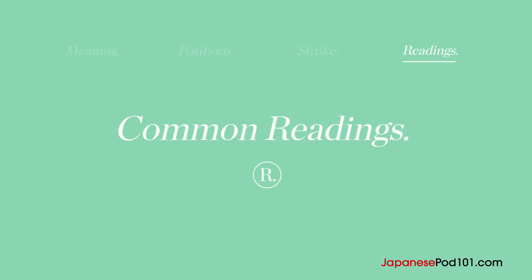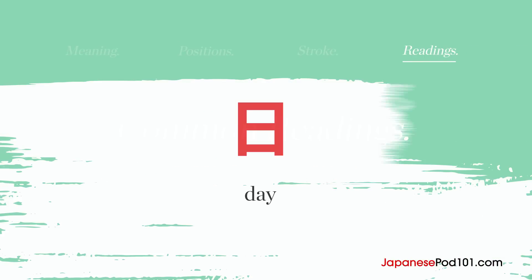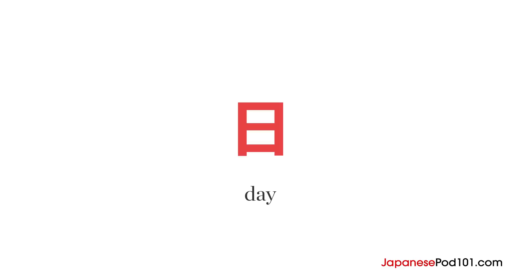The fourth and final stroke is a horizontal stroke closing out the box. And that's it, you're done! When the day radical is a kanji on its own, it can be read as nichi for the on reading and hi for the kun reading.